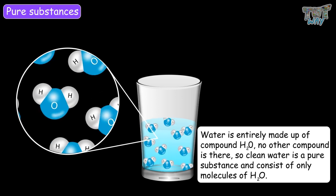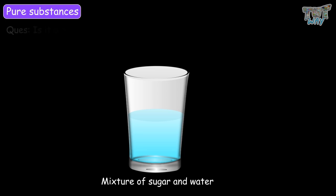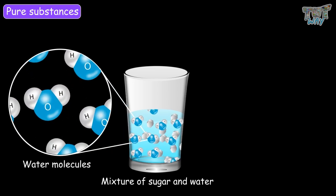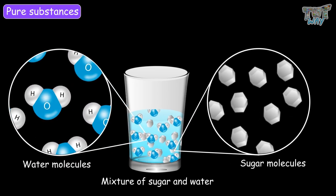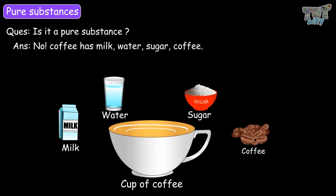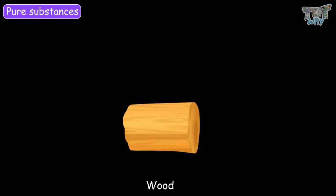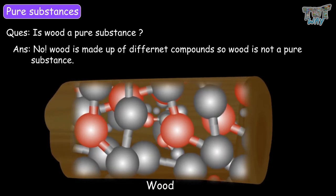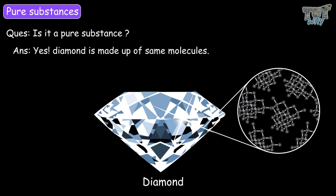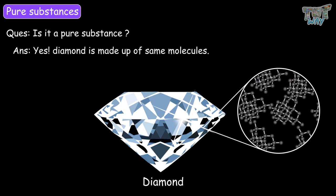Here we have some other substances. A mixture of sugar and water — is it a pure substance? No, it is not a pure substance. It has two types of compounds: water molecules and sugar molecules, which are different compounds. A cup of coffee — is it a pure substance? No. Coffee has milk, water, sugar, and coffee, so it has compounds of milk, water, sugar, and coffee. It is not a pure substance. Wood — is wood a pure substance? No, wood is made up of different compounds. Diamond — is this a pure substance? Yes. Diamond is made up of all the same types of molecules, so diamond is a pure substance. It only has one type of molecule.